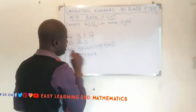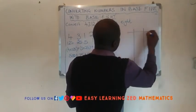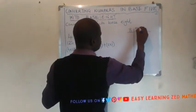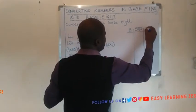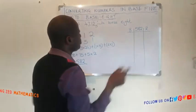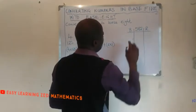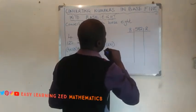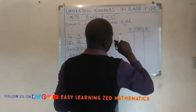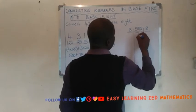I'll draw the frame here. I'm using the remainder method, so I'll write 8 because that is the base I want to convert into. I'll write the remainders here. How many times does 8 go into 582? It goes 72 times into 576, leaving a remainder.